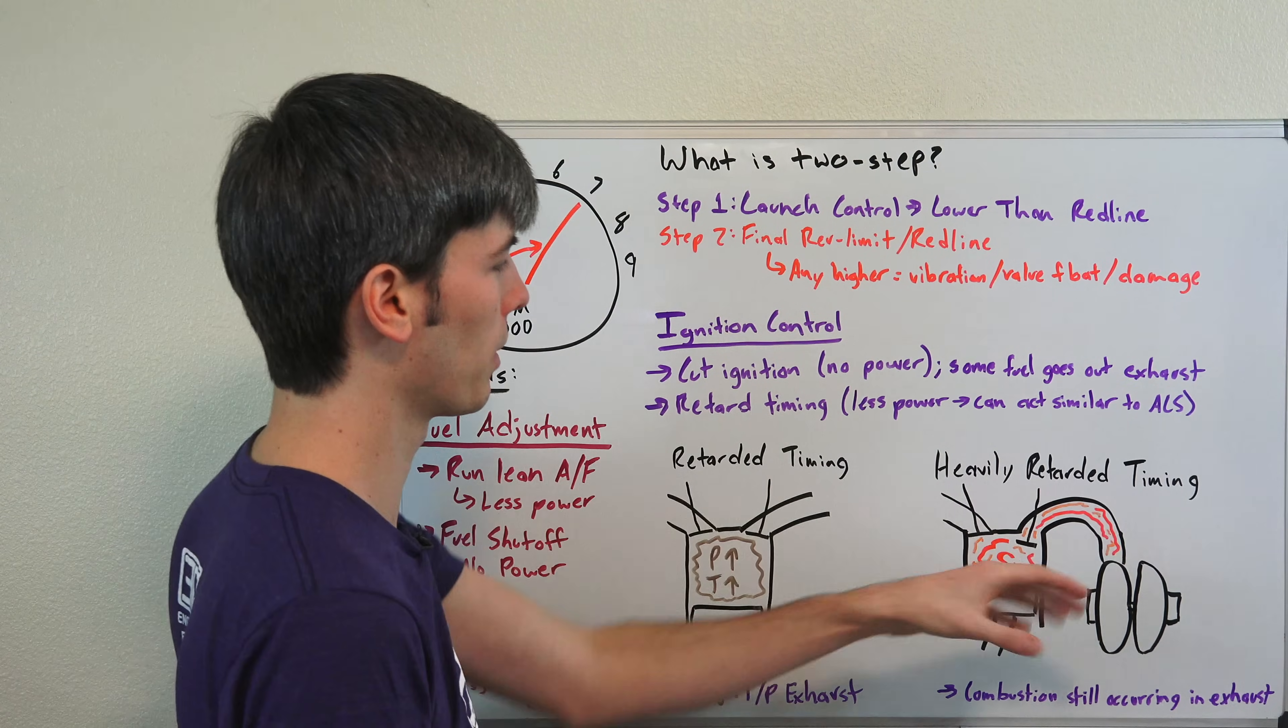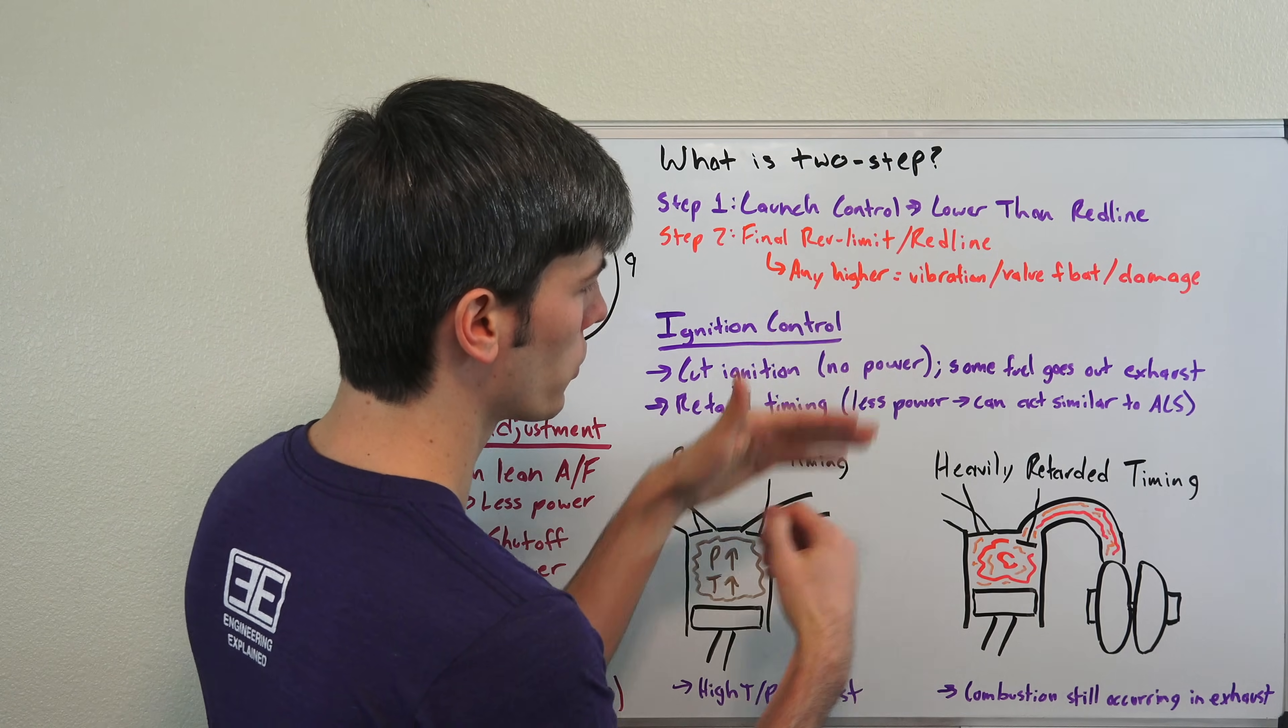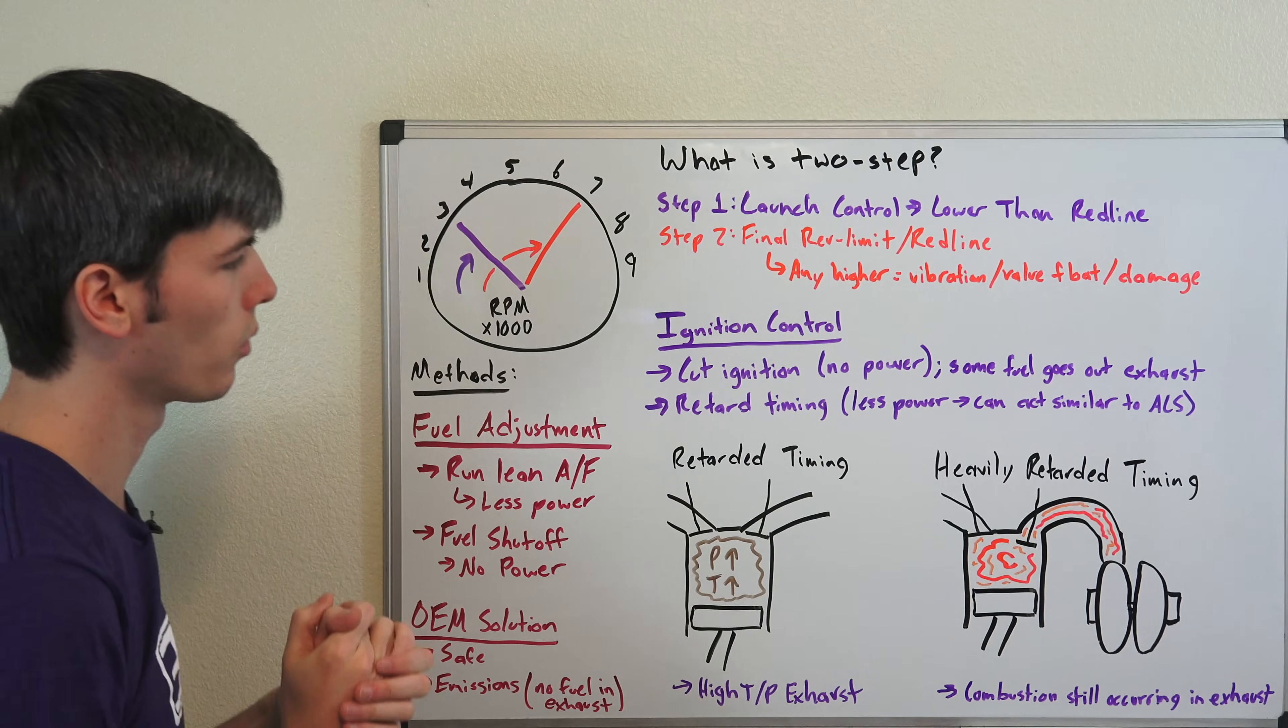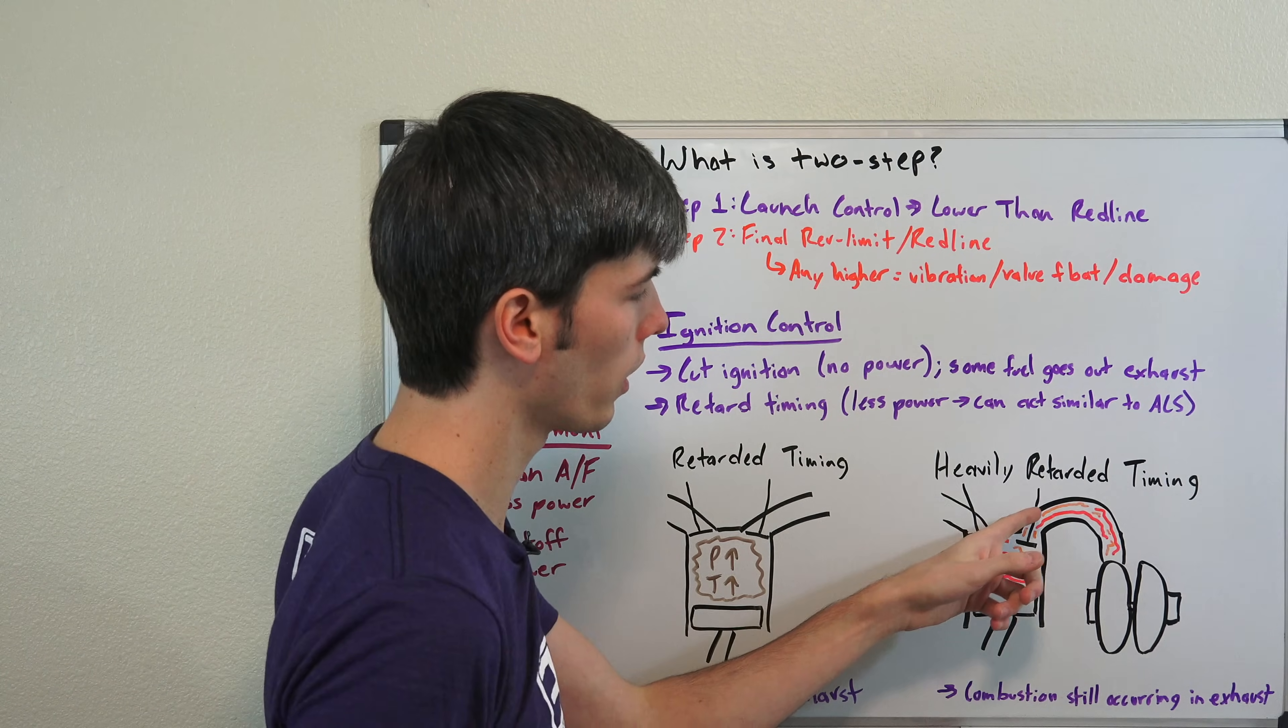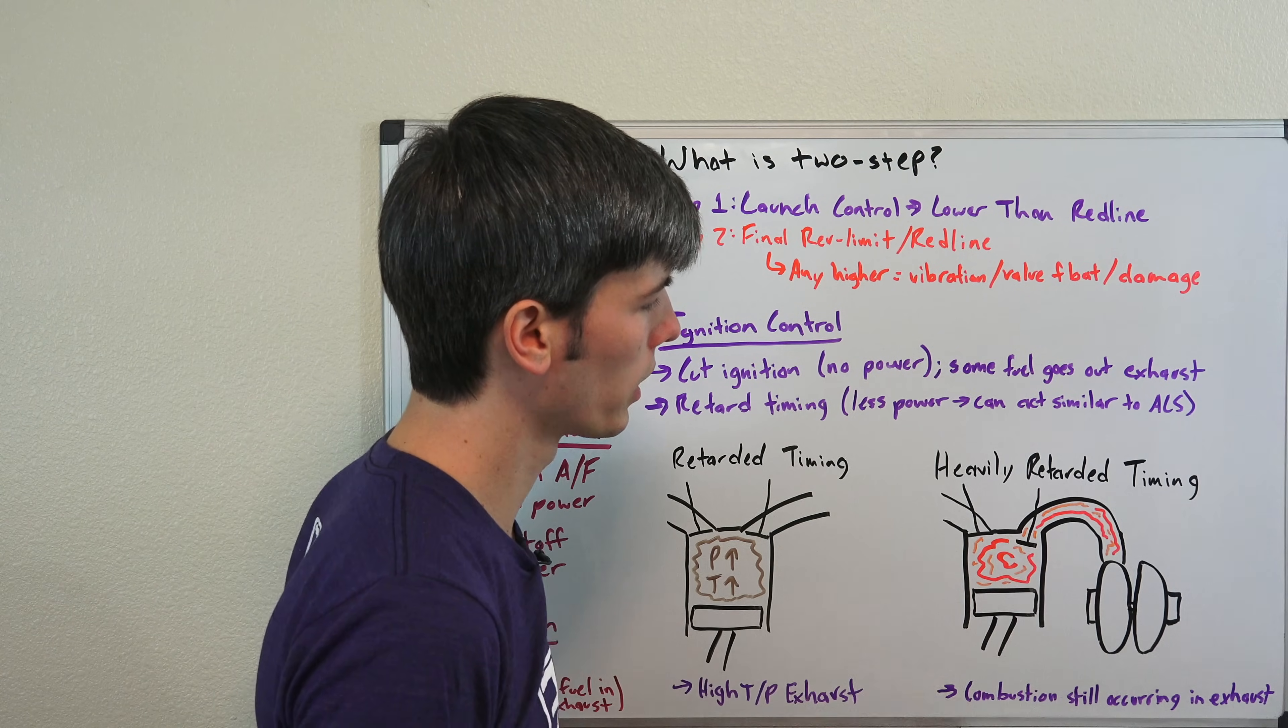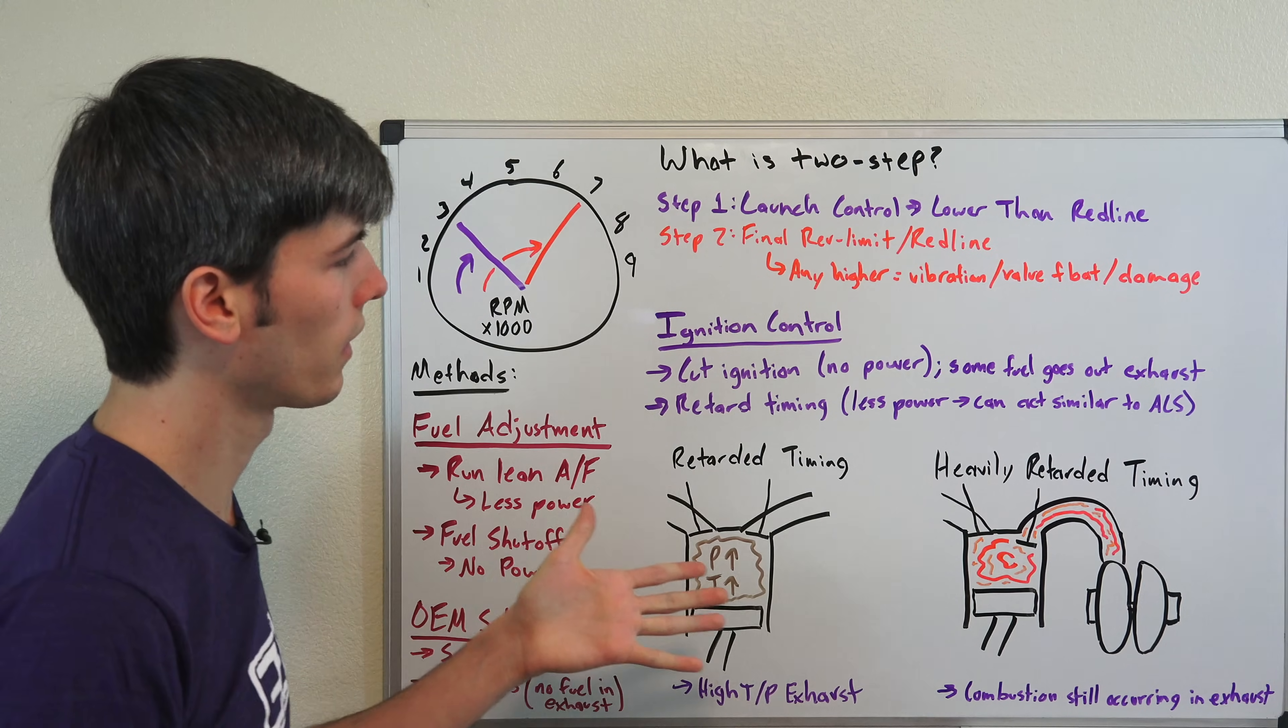Now if you heavily retard the timing, meaning you're waiting really late to ignite that air fuel mixture, so that you can keep the engine running, but you don't want it to increase in whatever RPM you've set that rev limiter at, well then when you open your exhaust, you may still have combustion occurring. So that air fuel mixture is still burning while it's going out, and then it's going to be spooling up that turbo, and then of course it can be spitting flames out the exhaust, things like that.